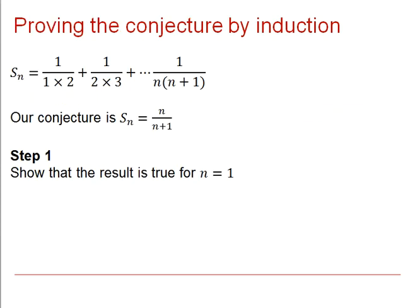Going back to our example, let's say that that pattern for n terms we denote by Sn. So our conjecture or the result we wish to prove is that Sn equals n over n plus 1. The first step is that we must show that the result is true for n equals 1. Let's have a think.